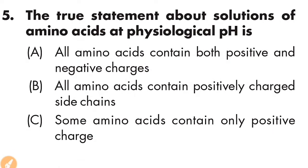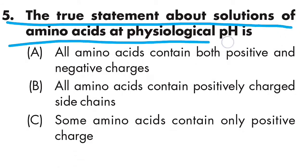Question number five: the true statement about a solution of amino acids at physiological pH is — Option A is all amino acids contain both positive and negative charges, Option B is all amino acids contain positively charged side chains, Option C is some amino acids contain only positive charge. Option A is correct: all amino acids contain both positive and negative charges.